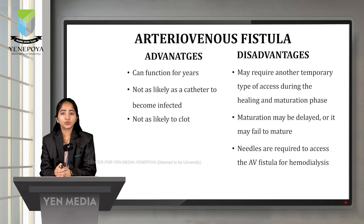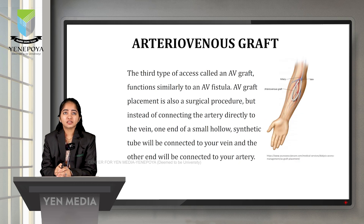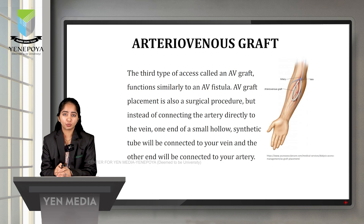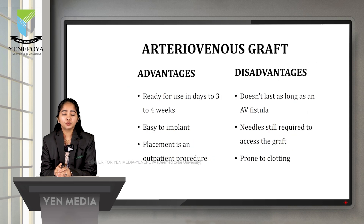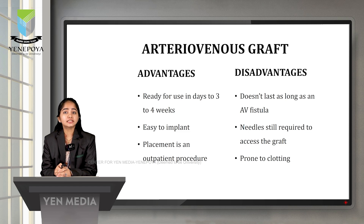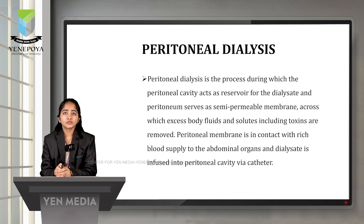The third type of vascular access is the arteriovenous graft (AV graft), which functions similarly to an AV fistula. Instead of connecting the artery directly to the vein, one end of a small hollow synthetic tube — made of polytetrafluoroethylene (PTFE) — is connected to the vein and the other end to the artery. Advantages: ready for use in 3 to 4 weeks, easy to implant, and placement is an outpatient procedure. Disadvantages: does not last as long as an AV fistula, needles still required to access the graft, and prone to clotting.